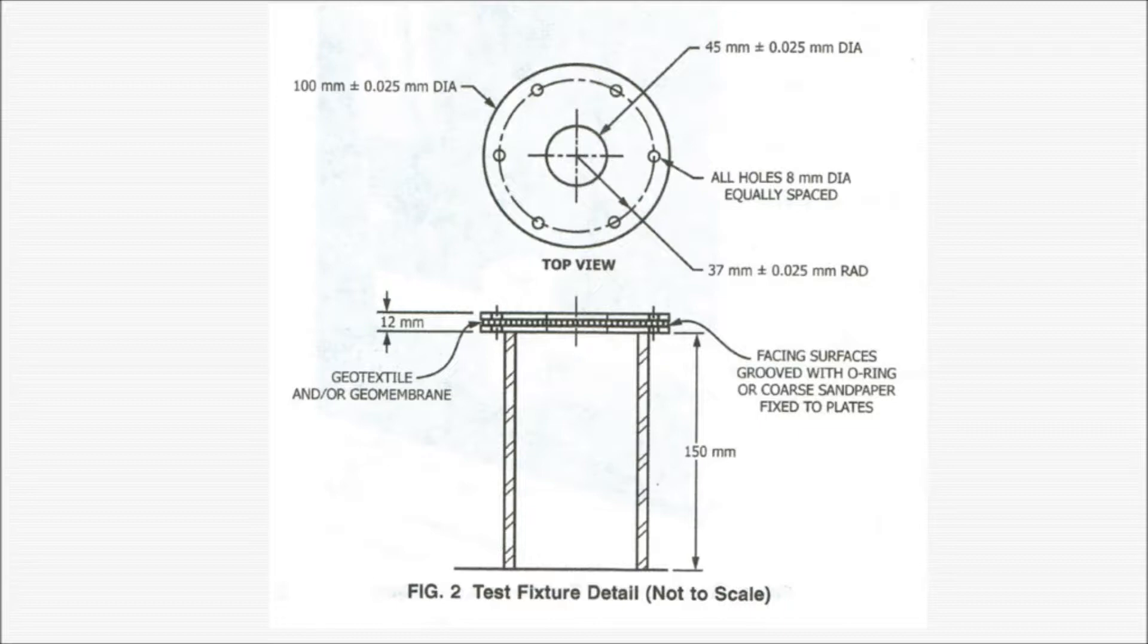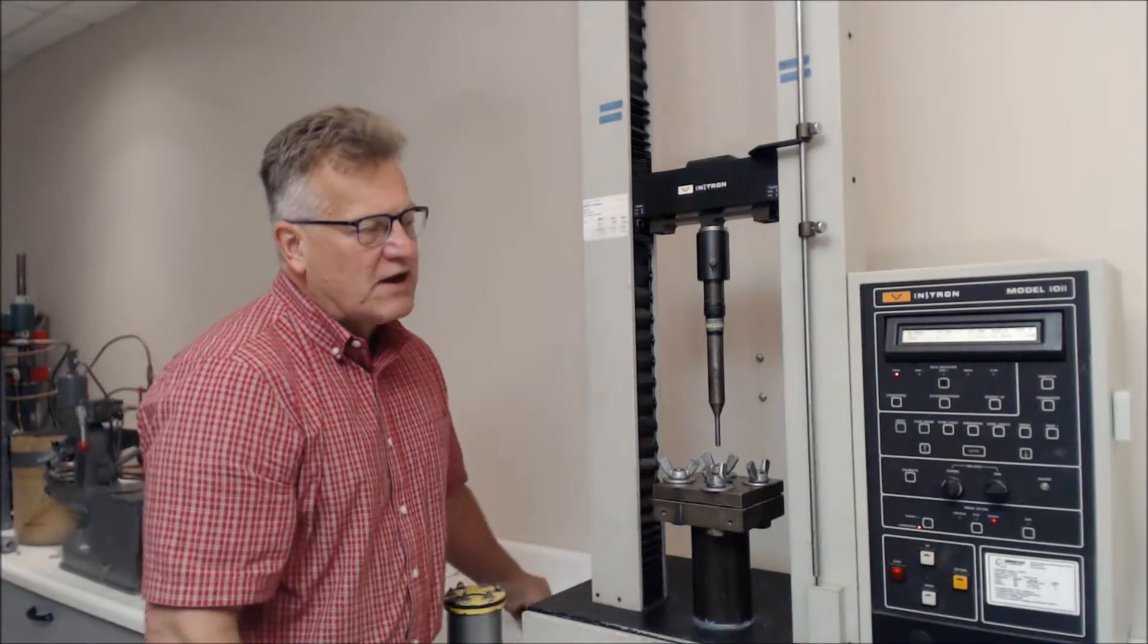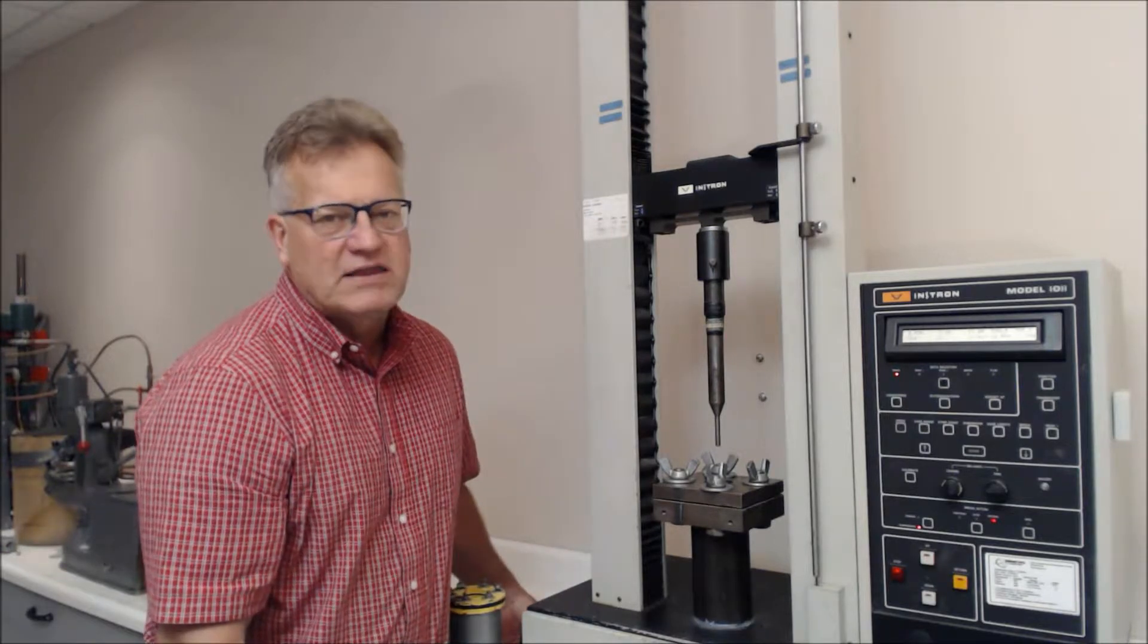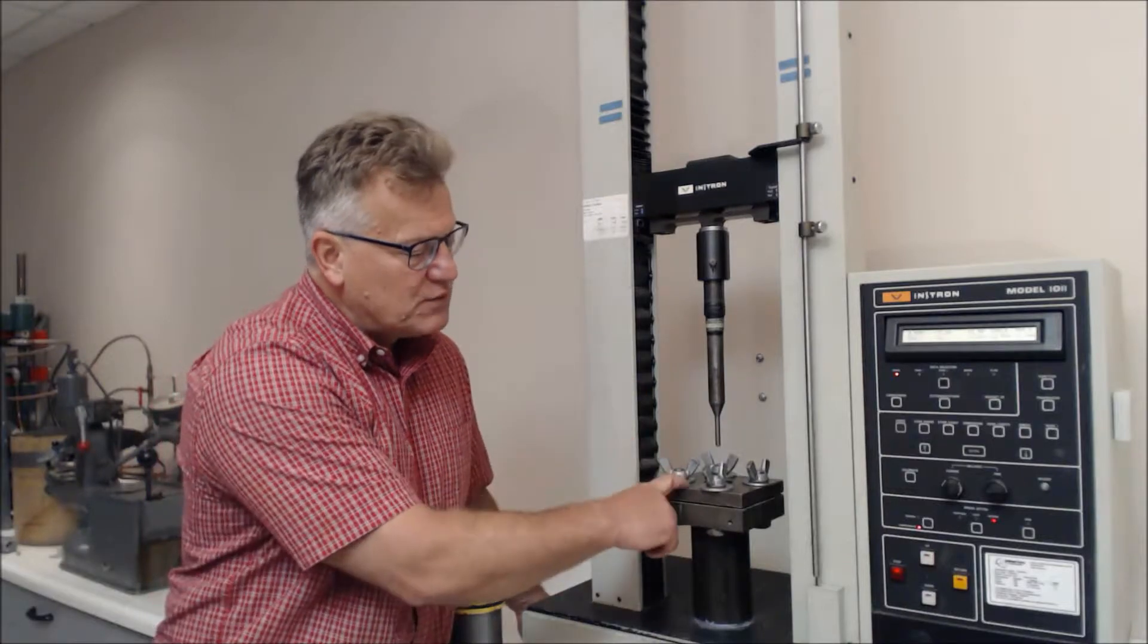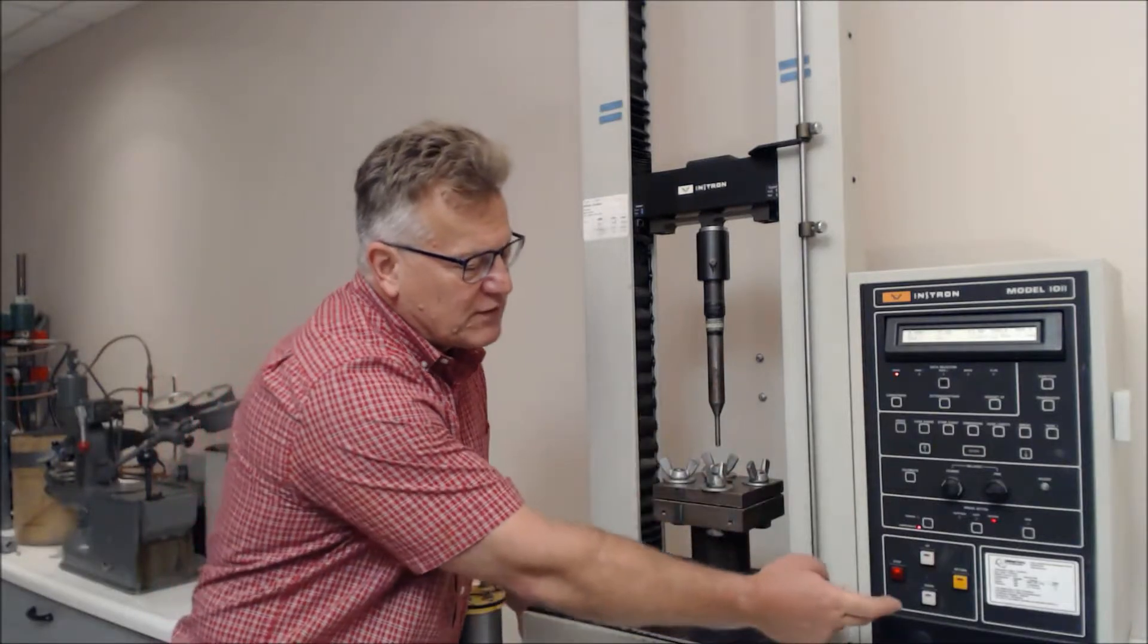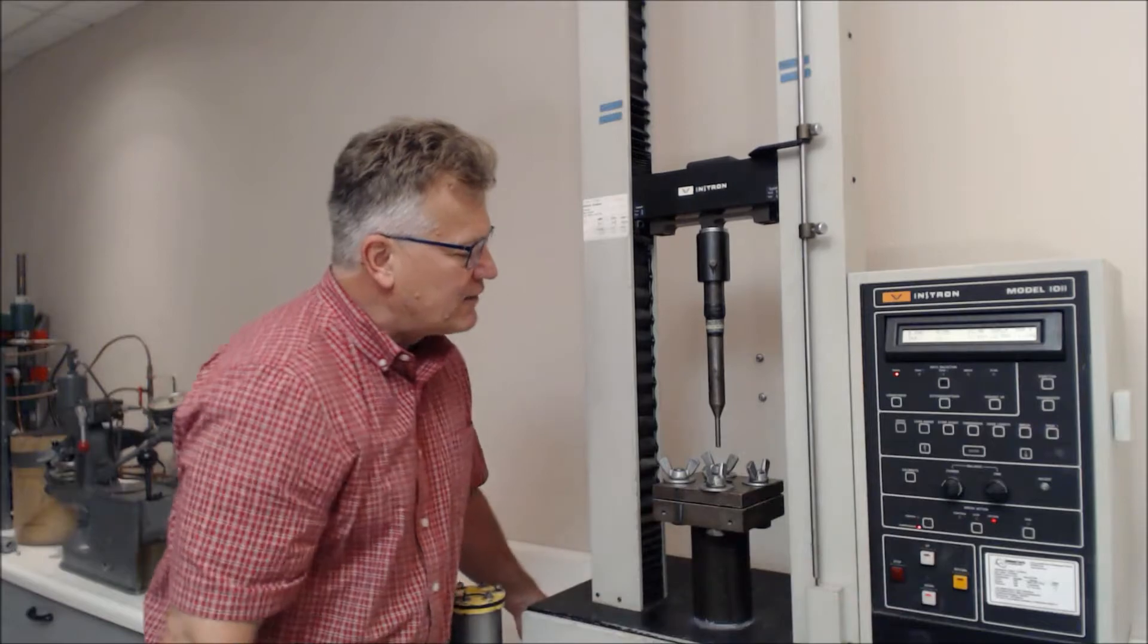So this opening is prescribed as well as the diameter of the probe. It's running at 12 inches per minute or 300 millimeters per minute, and it's puncturing through the center. It's on a continuous rate of extension machine, and down we go.